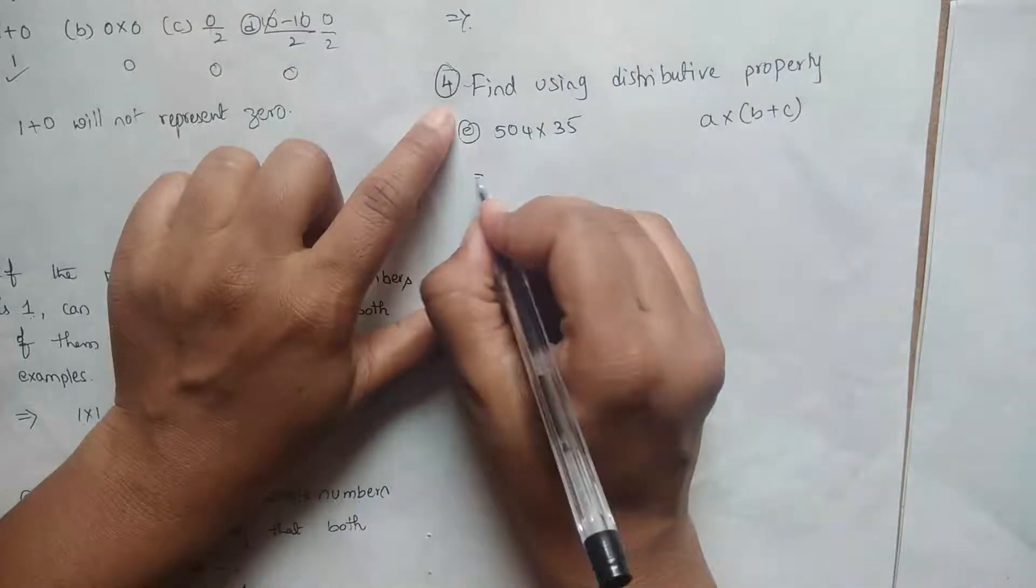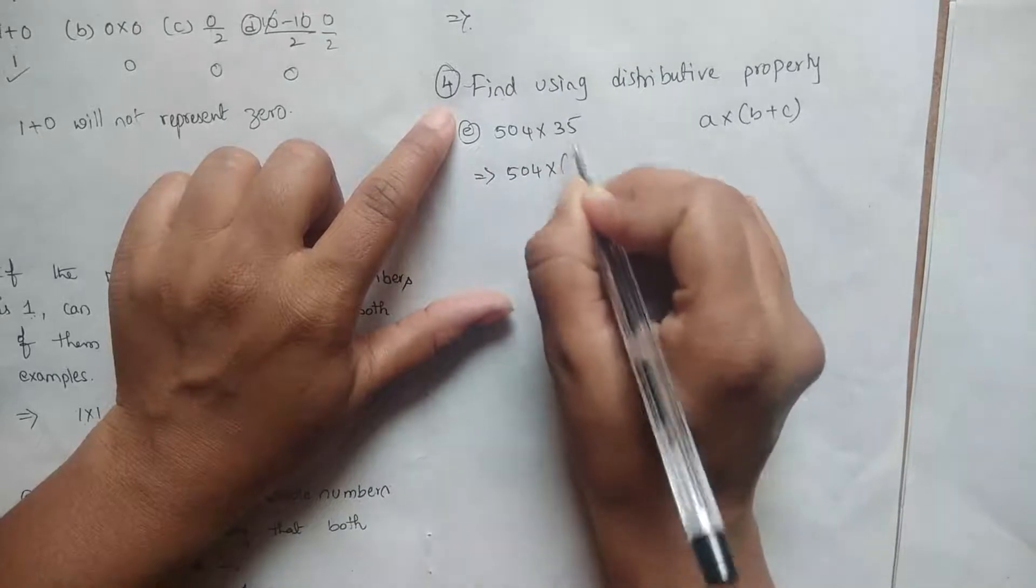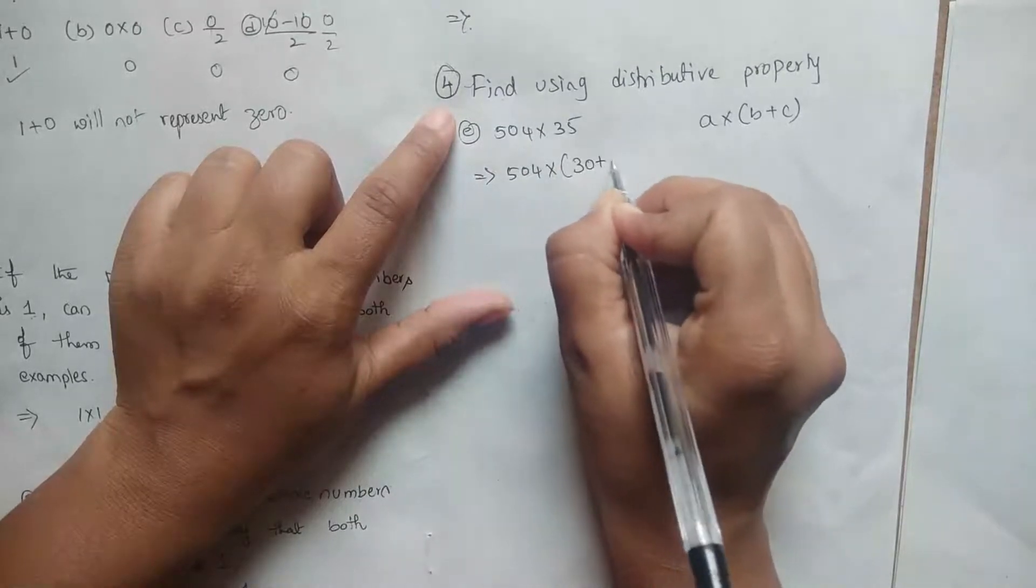Here is the given question. Now what we have to do is 504 into 35. We can write it as 30 plus 5.